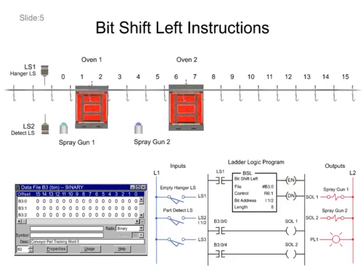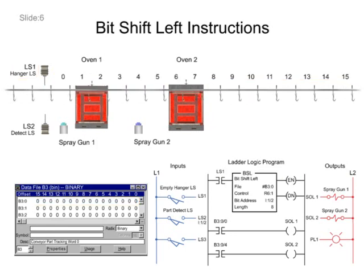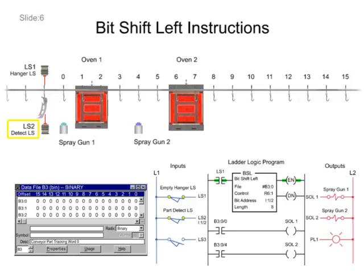As hooks are detected by LS1 limit switch, bits are shifted in file B30 from left to right. When parts are detected by LS2 limit switch, logic 1 is loaded into the first bit of the shift register.